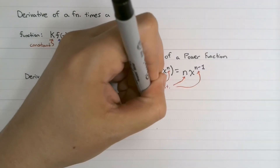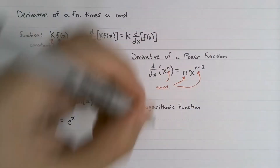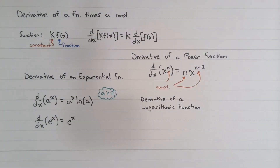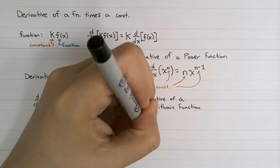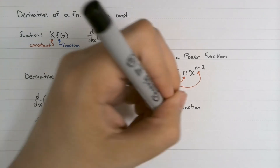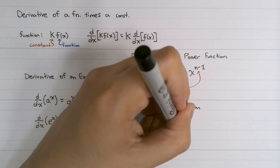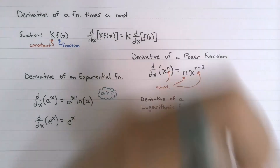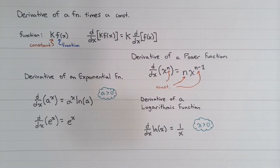Now let's look at logarithmic functions. The derivative of the natural logarithm of x is 1 over x — this applies for x greater than 0. These four basic derivatives are pretty common and well known among students. However, when we get into trigonometric functions, students seem to forget their derivatives.